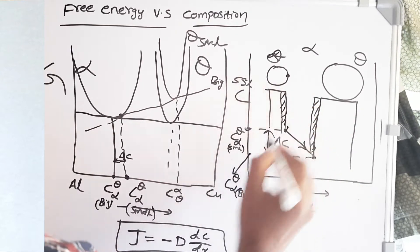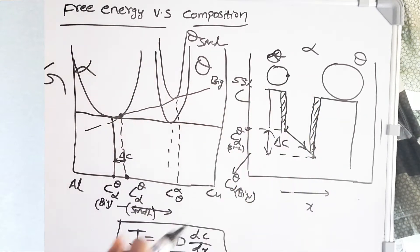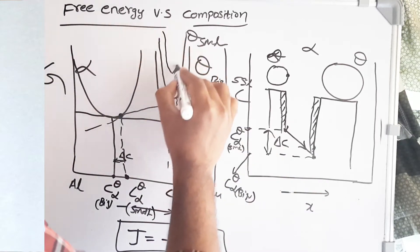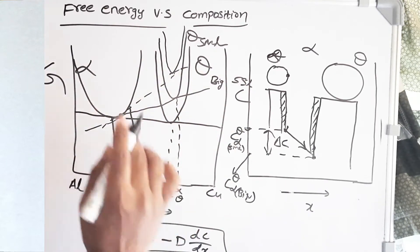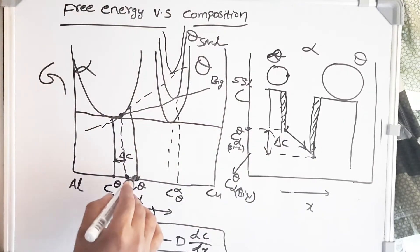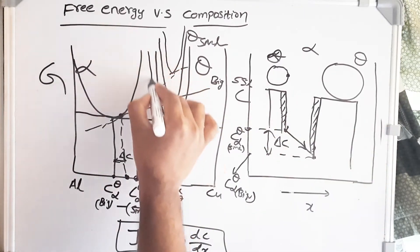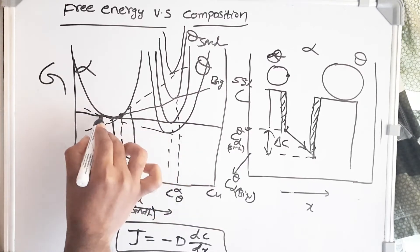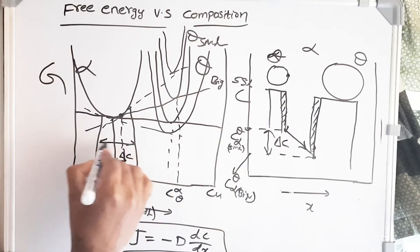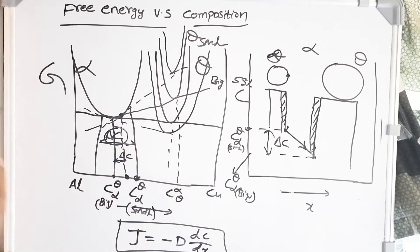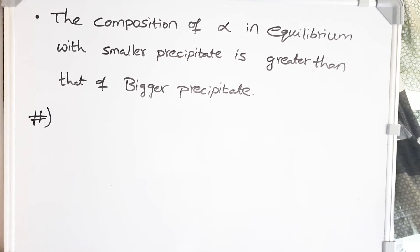The copper atoms from the smaller precipitate travel to the bigger precipitate, so the bigger precipitate grows and the smaller precipitate is consumed. With time, the smaller precipitate size gradually decreases, and as its size decreases its free energy goes up. Drawing the common tangent again, the equilibrium concentration of alpha with theta smaller is gradually increasing as its size decreases. For the bigger particle, its free energy comes down with increasing size, so its equilibrium composition with alpha comes down. Delta C is gradually increasing with the process, which means the smaller the precipitate becomes, the faster it dissolves. The composition of alpha in equilibrium with the smaller precipitate is always greater than that with the bigger precipitate, creating the concentration gradient that drives dissolution of smaller particles. At the expense of the smaller particles, the bigger particles grow.